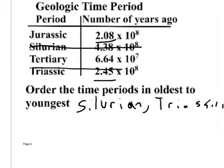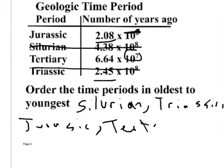Someone raise your hand. Tell me what's next, Jurassic or Tertiary, Blaine? Jurassic, because 10 to the 8th is bigger than 10 to the 7th, isn't it? Yes. So my youngest is Tertiary because it has the smaller number at 10 to the 7th.